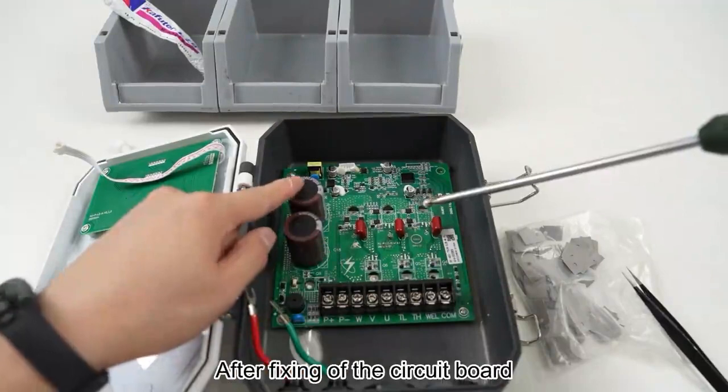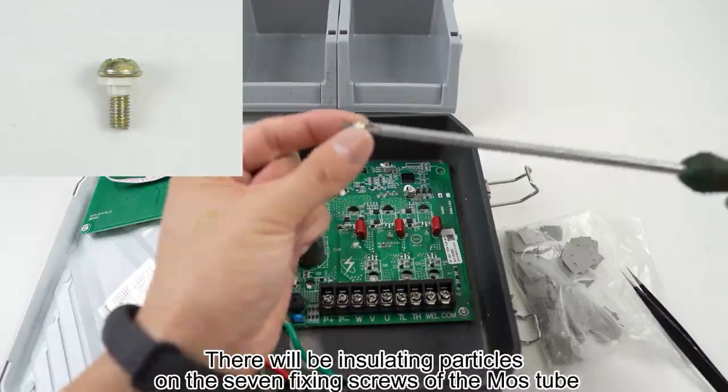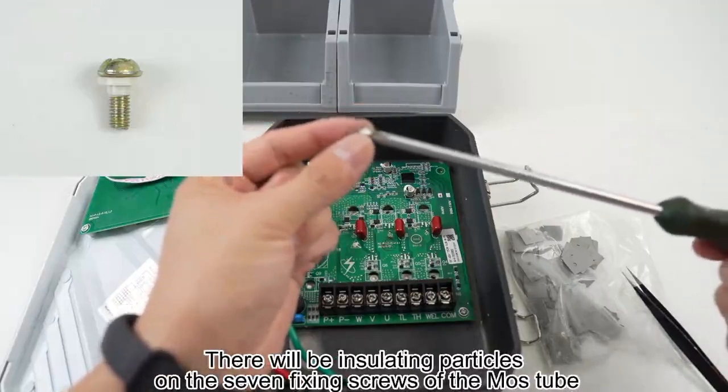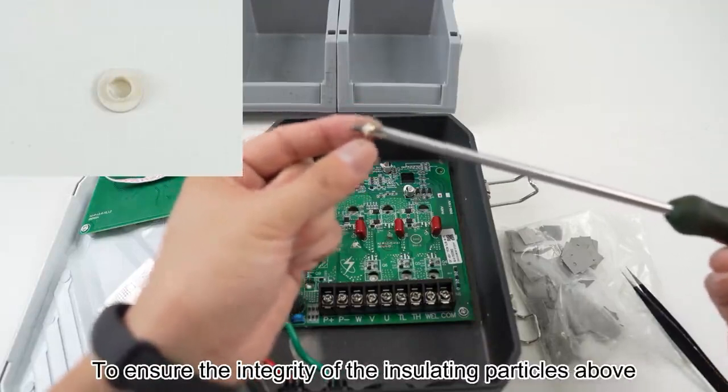After fixing the circuit board, install the fixing screws of the MOS tube. There will be insulating particles on the seven fixing screws of the MOS tube. Ensure the integrity of the insulating particles.